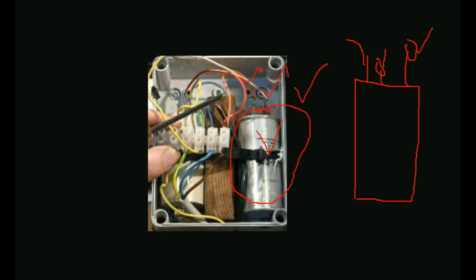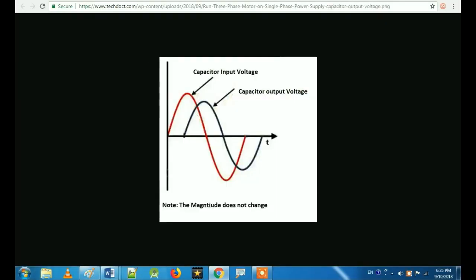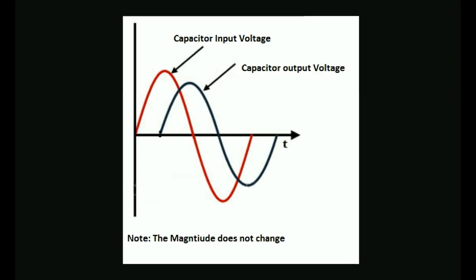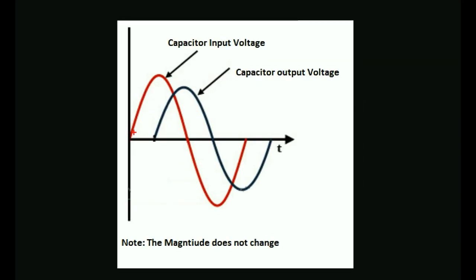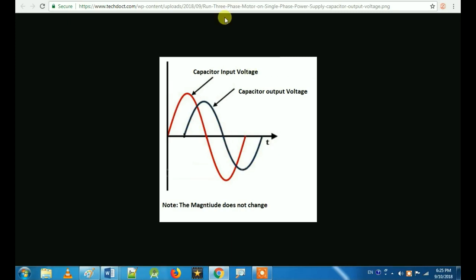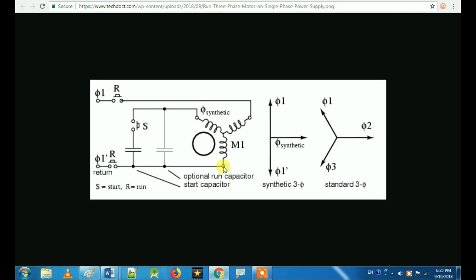This is an agriculture starter. Normally we have a 3-phase motor. If you connect a capacitor, you can adjust the output voltage and adjust the magnitude — that is the capacitor property. We can use that property. Let's take a 3-phase starter and motor.